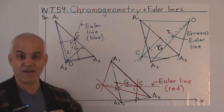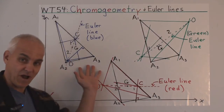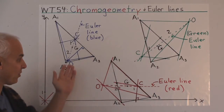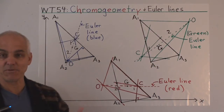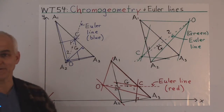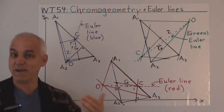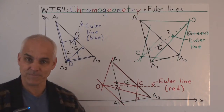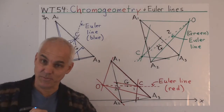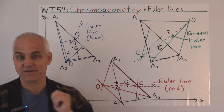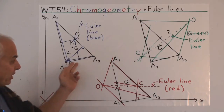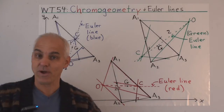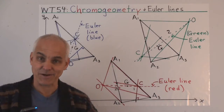This shows us that the familiar phenomena in blue geometry extends to the green and red geometries. The three geometries are acting in a similar way, even though the actual pictures are quite different. That's our first basic principle of chromo geometry — there's a parallel between these three geometries. The second principle is that these three geometries fit together, and looking at all three constructions simultaneously should reveal something new and interesting. And that's exactly what happens.